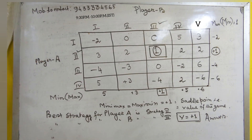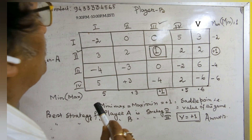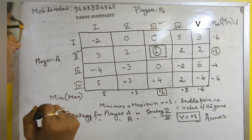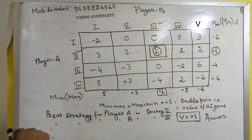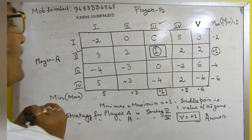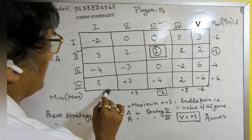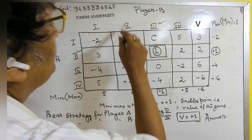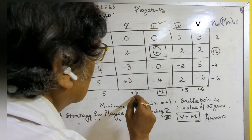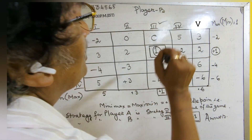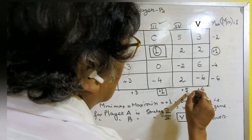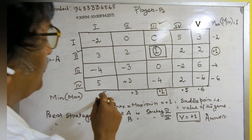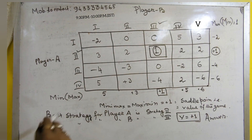The same process you have to do for each column, but instead of minimum value, you have to put the maximum value for each column. Taking the first column — out of minus 2, plus 3, minus 4, plus 5 — the maximum value is plus 5. For the second column: 0, 2, minus 3, plus 3 — the maximum value is plus 3. For the third column, the maximum value is plus 1. For the fourth column, the maximum value is plus 5. And for the fifth column, the maximum value is plus 6.